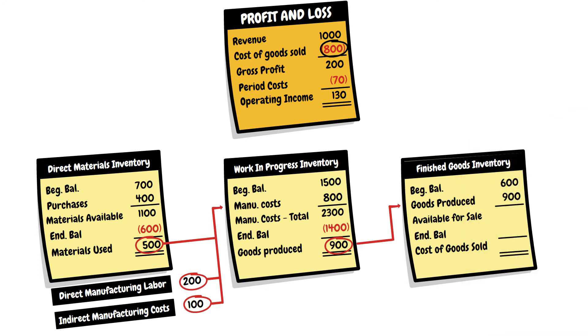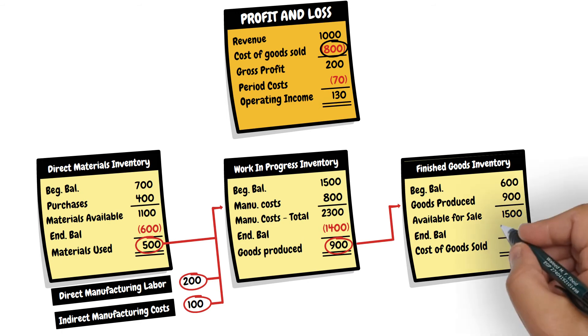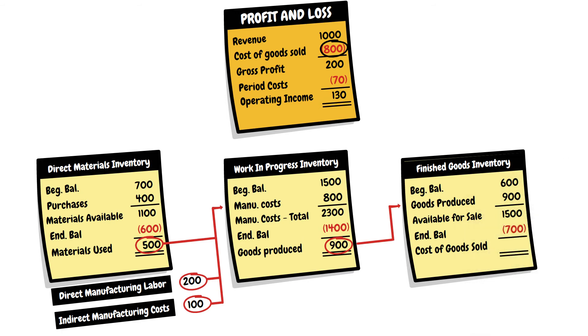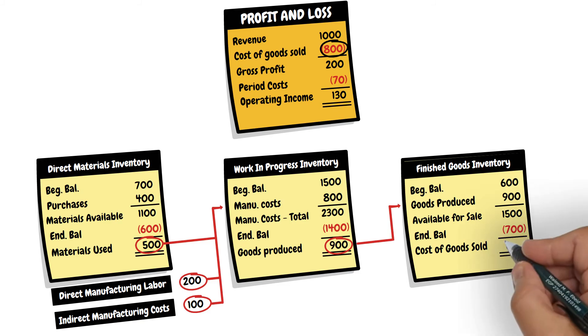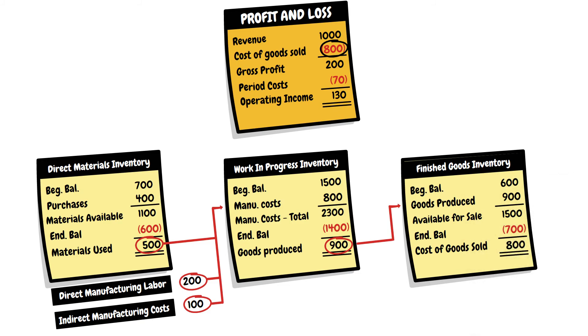By adding, we get the cost of goods available for sale. At year-end, the ending inventory of the finished goods that were not sold was 700, and therefore, the cost of goods sold during the year is 800 — this figure here.